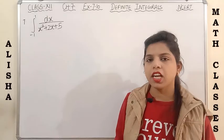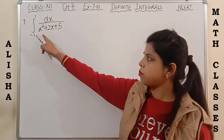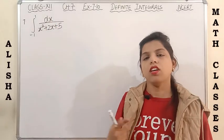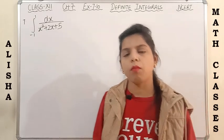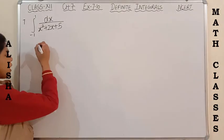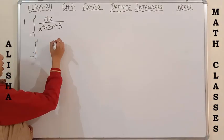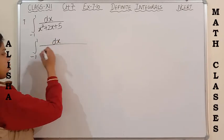Next is question number 7: integration with limits -1 to 1 of dx/(x² + 2x + 5). Again this is in the form of a quadratic equation, so we have to make it in the form of a complete square. This is also a very simple question.